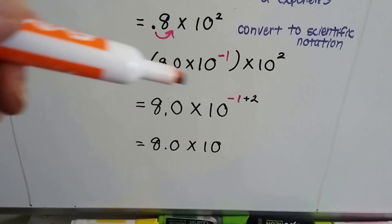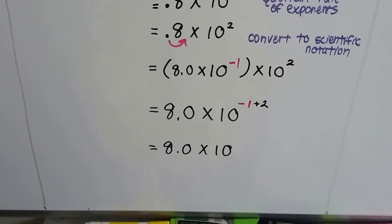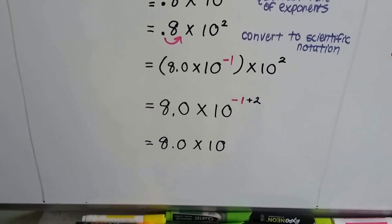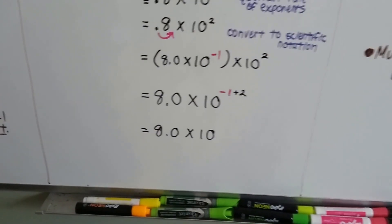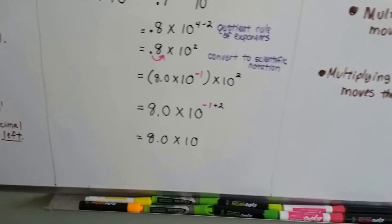We only write the exponent if it's a negative 1, to show that it's negative. When it's a positive 1, we just leave it. So our answer is 8 times 10.